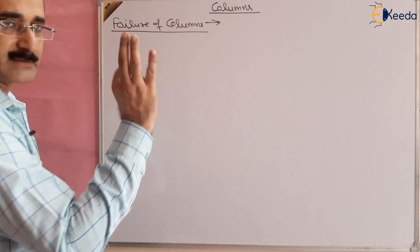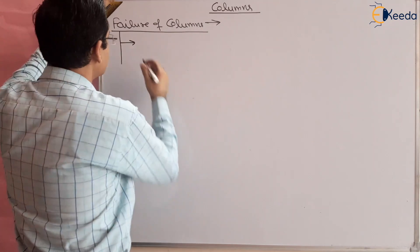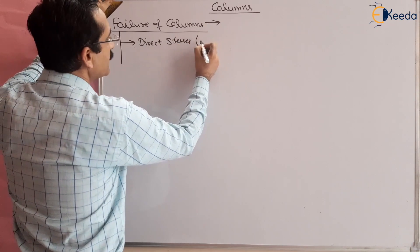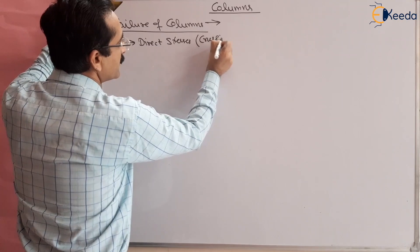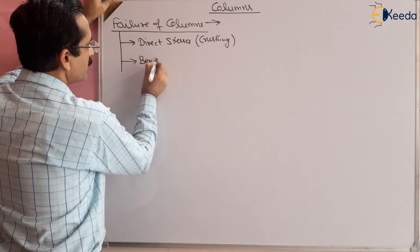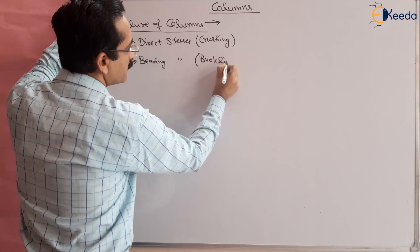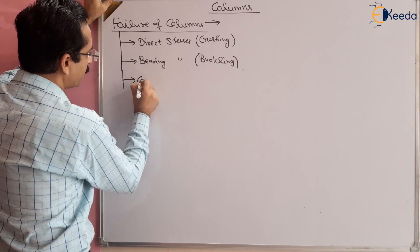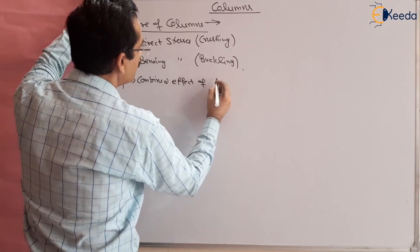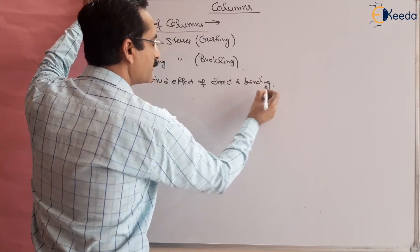Columns may fail due to three reasons basically. One is due to direct stresses — when we are applying compressive stresses, it may fail in direct stresses, which is also called crushing stress. Second, it may fail due to bending stresses, which is also called buckling. Or it may fail due to the combined effect of direct and bending stresses.